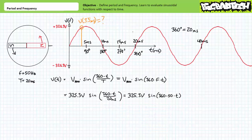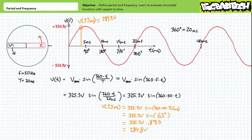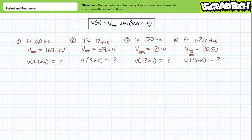To find output voltage at 3.5 milliseconds, substitute into the voltage-as-a-function-of-time formula. Performing the unit conversion inside the parentheses first yields 325.3 volts × sin(63°). This yields 325.3 × 0.8910, or approximately 289.8 volts.